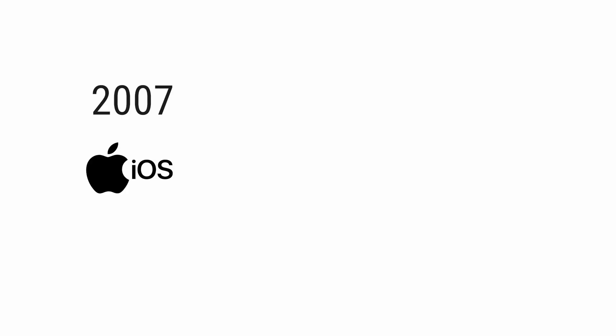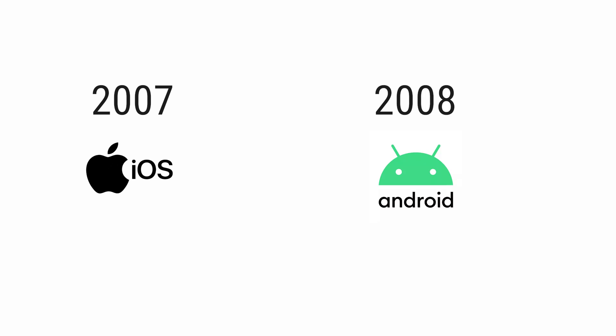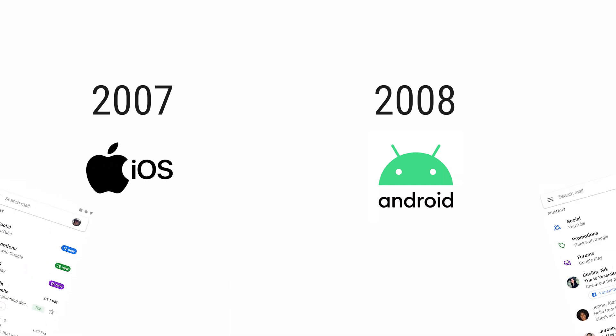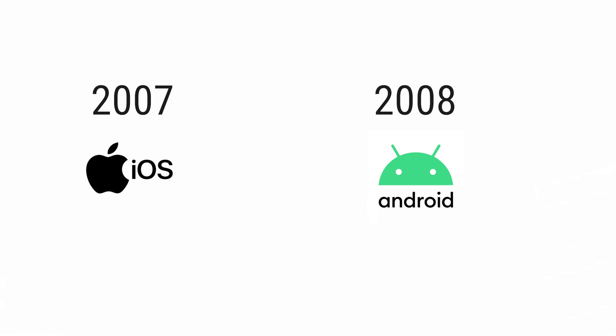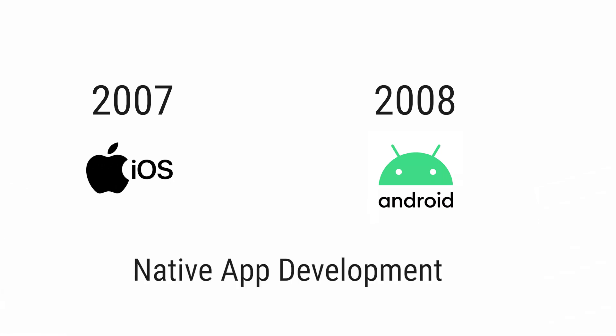A quick history of mobile app development. In mid-2007, the iOS mobile operating system was released, and late 2008 came Android. For a very short period of time, if you wanted an app to be available on both of these platforms, you'd have to develop essentially two different apps, each with their own codebase — one for Android and the other one for iOS. This is called native app development.